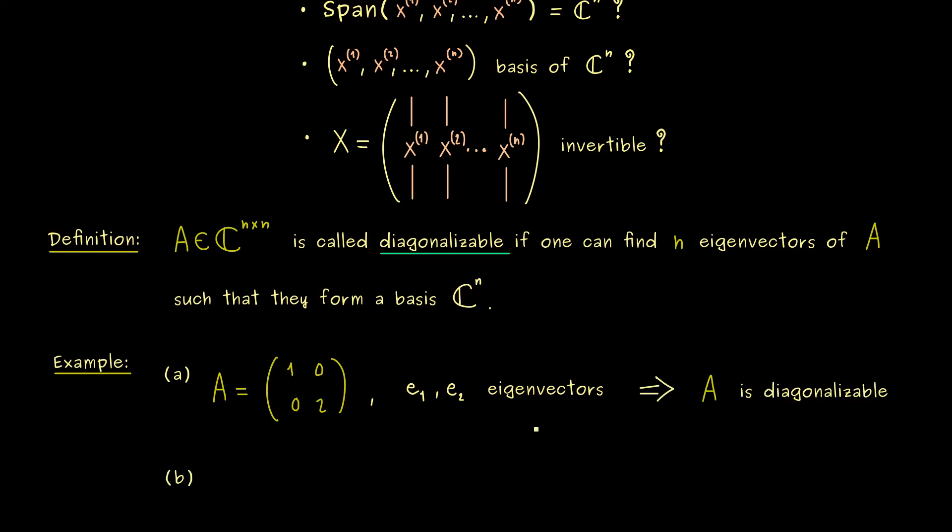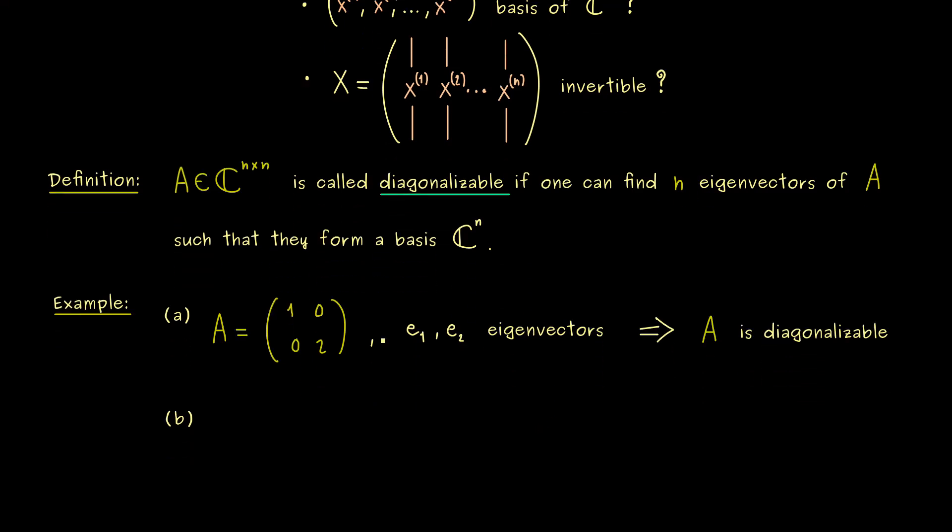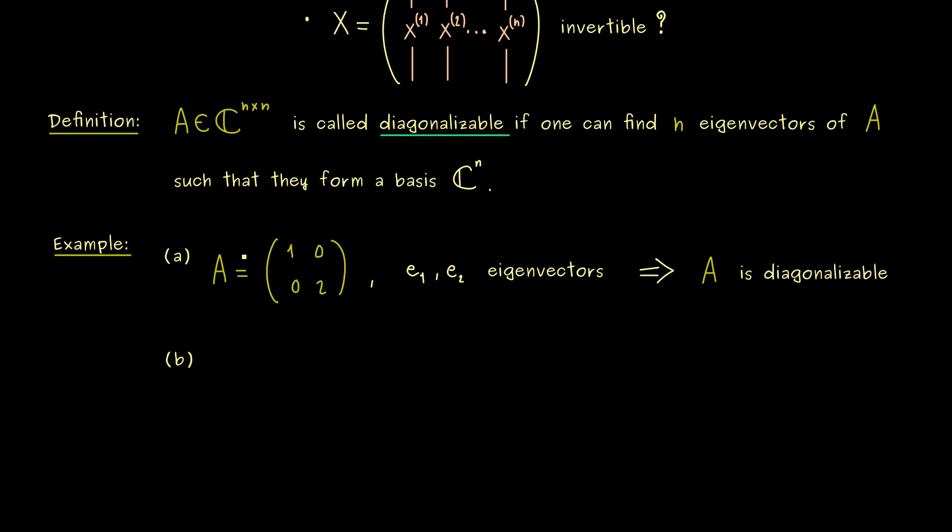However, of course, the important question is, what happens if we go to a matrix which is not of diagonal form already. So let's call it the matrix B and let's write it as a 2 times 2 matrix again. And now I want 1, 1, 0, 2.